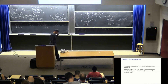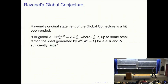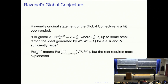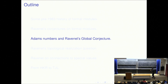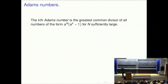Then there's the global conjecture. Ravenel's statement was a bit open-ended: for global A, the Ext group — which is Ext in the category of V^A T comodules — should come out to be A mod J_m(A), where J_m(A) is, up to some small factor, a certain ideal. To make this precise, you need to know about Adams numbers. Without knowing about Adams numbers, I think this is a mystifying statement.